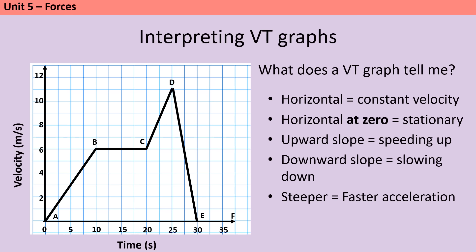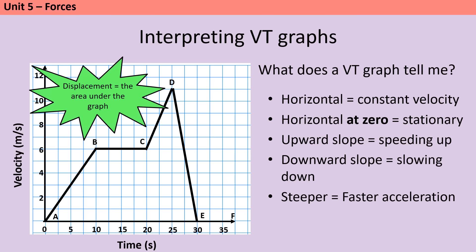A velocity-time graph looks a lot like a distance-time graph but instead of distance on the y-axis we now have velocity. On a velocity-time graph a horizontal portion tells us the object is moving at constant velocity. To show an object is stationary, the line needs to be horizontal at zero. If the line slopes up the object has positive acceleration and is speeding up; if it slopes downward the object is slowing down, and the steeper the slope the faster the acceleration. To calculate how far the object has travelled we need to calculate the area under the graph using the areas of rectangles and triangles.